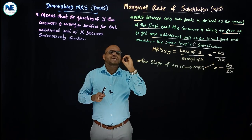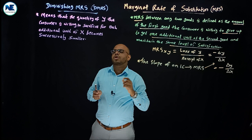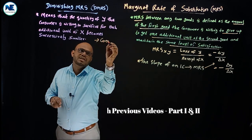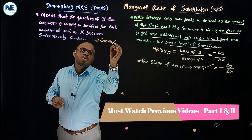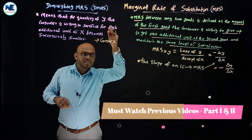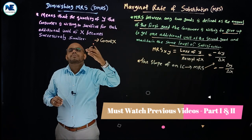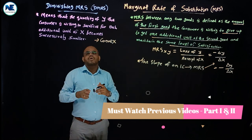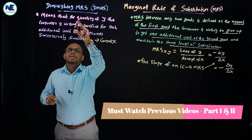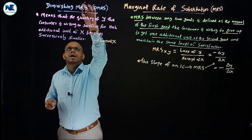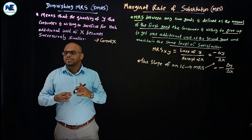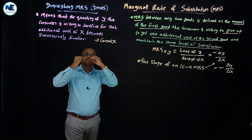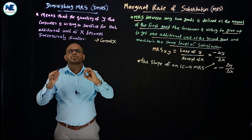The main peculiarity of the indifference curve is that it is convex to the origin. The indifference curve has a negative slope. This negative slope is due to the diminishing marginal rate of substitution. What do we mean by diminishing marginal rate of substitution?